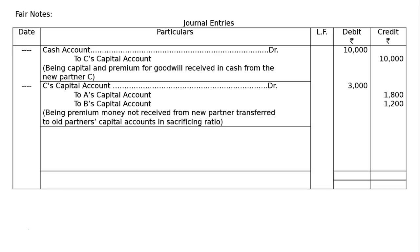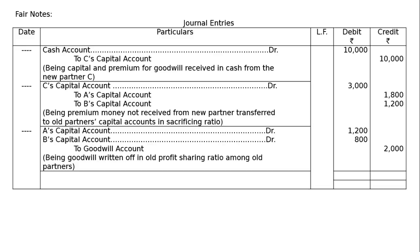And goodwill is already appearing in the books. It will be written up among old partners in the old ratio. That is A's capital account debited, B's capital account debited in old ratio of 3 is to 2 - that is 1,200 and 800 to goodwill account rupees 2,000, being goodwill written up in old profit sharing ratio among old partners. Total will be debit rupees 16,000 and credit rupees 16,000. And this will be the final answer.